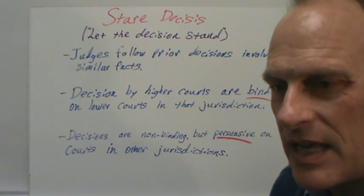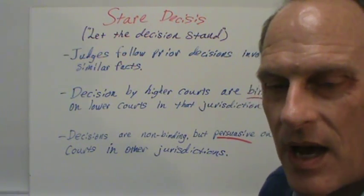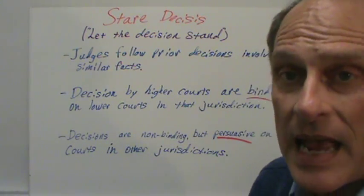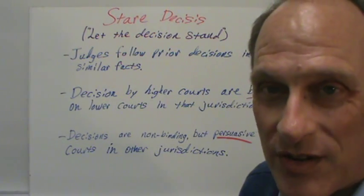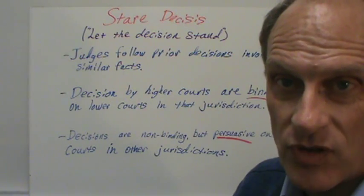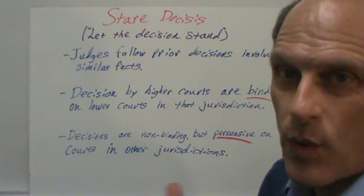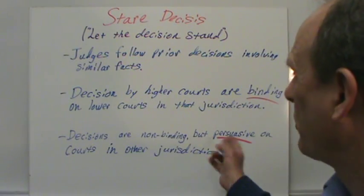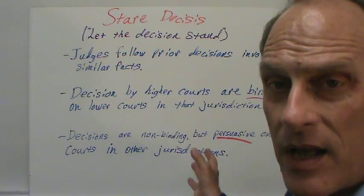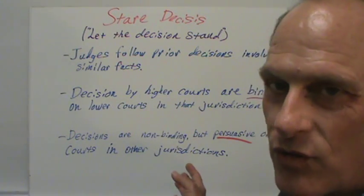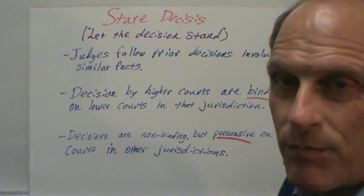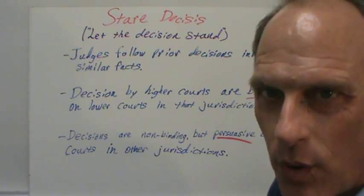This concept of stare decisis also means that a decision by a higher court in a particular jurisdiction will be binding on all the lower courts in that jurisdiction. But what about court decisions from other jurisdictions? If you have a type of case where you can't find a similar controlling case or precedent in your jurisdiction, and you find one in a neighboring jurisdiction, it can be used persuasively to persuade the judge in your case. Cases from courts in other jurisdictions are certainly not going to be binding, but they may be what we call persuasive authority.